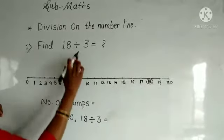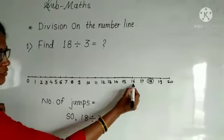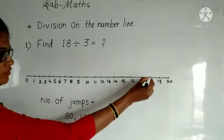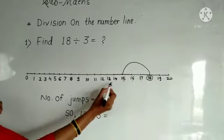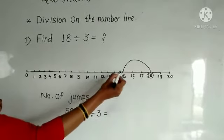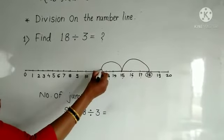So, 3 steps backwards: 1, 2, 3, jump on the number 15. Next, 1, 2, 3, jump on the number 12.